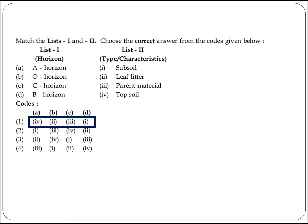The next question asks to match List 1 and List 2 for soil horizons. The A horizon is topsoil, the O horizon is leaf litter, the C horizon is parent material, and the B horizon is subsoil. Option 1 is the right answer.